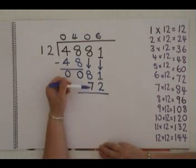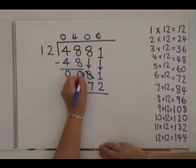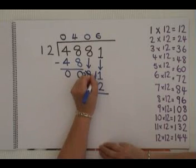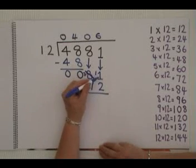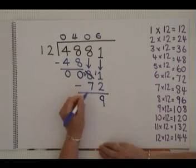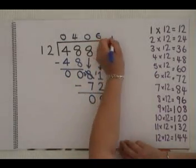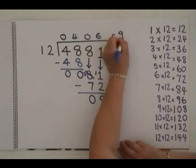And then you take 72 away from 81. Make that into a 7. Make that into 11. 11 take away 2 is 9. 7 take away 7 is 0. And that gives us a remainder of 9.